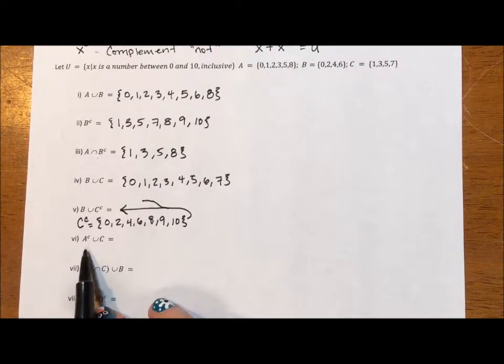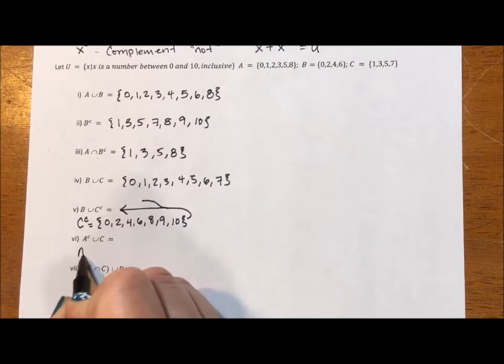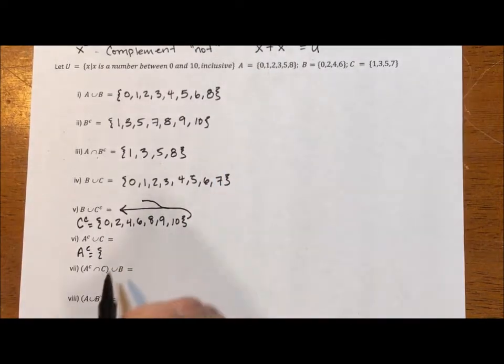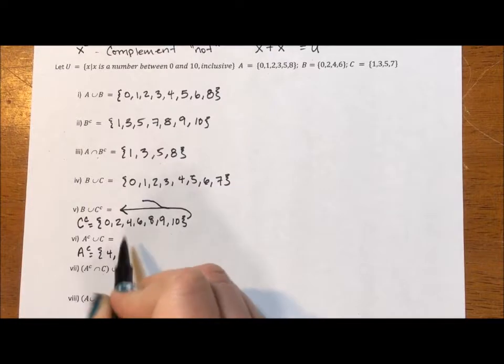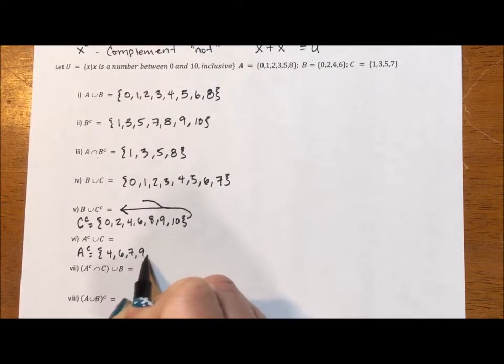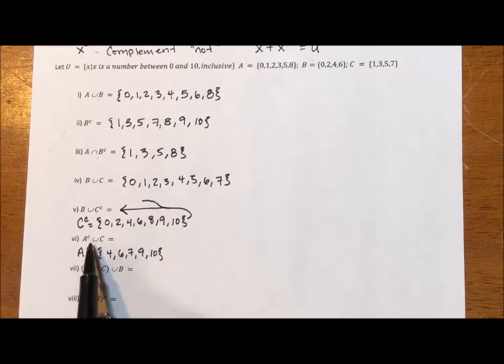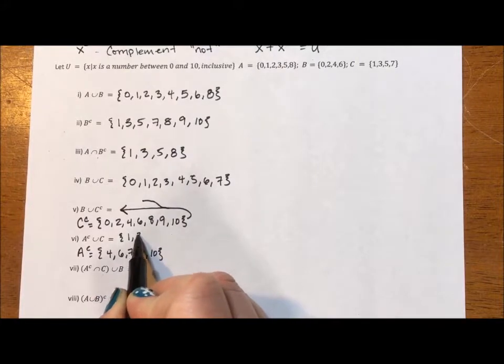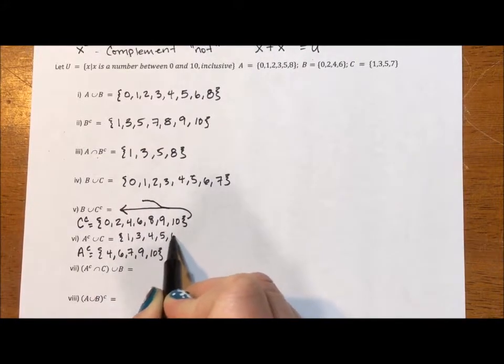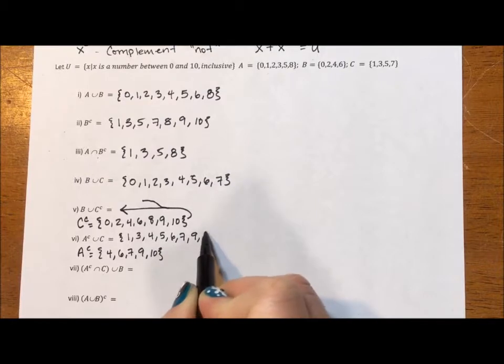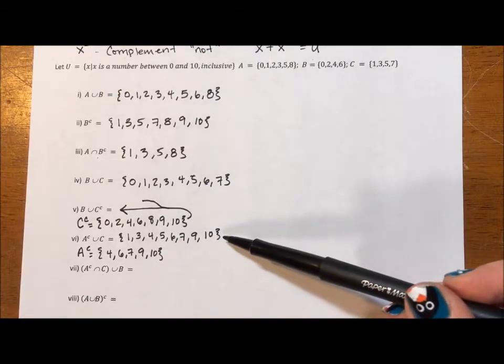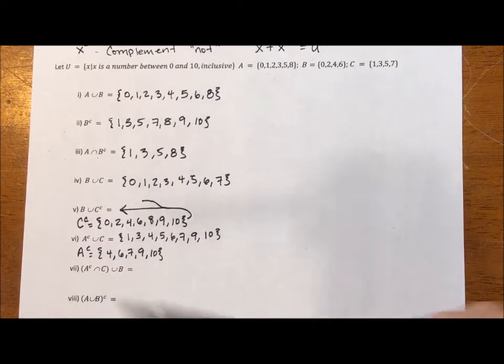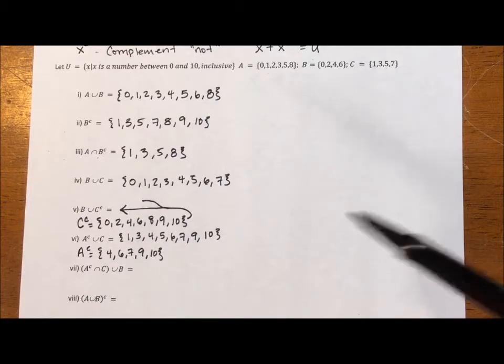A complement with C. A complement, once again, we want to write this down. It'll help us. So 0, 1, 2, 3, 4, 5, 6, 7, 8, 9, 10. We want to put everything of this together with 1, 3, 5, 7. So that's going to be 1, 3, 4, 5, 6, 7, 9, 10. So this time, the union actually added more elements because A complement is not a subset of C.